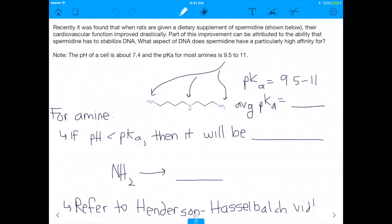Okay, so assuming we know that about DNA, let's talk a bit about spermidine. So spermidine is shown here, and I attached the question at the top, and the thing I want you to remember is that the pH of a cell is 7.4, and the pKa for most amines is 9.5 to 11. So if you were to average that, I'd say like the average pH of that is like what, 10.25-ish? So if that's the average pKa...